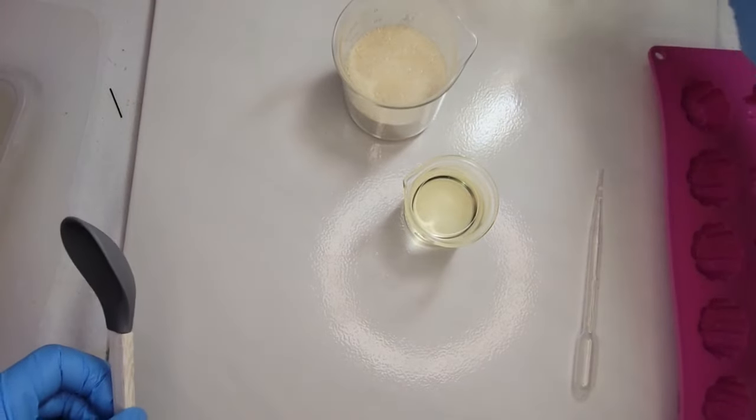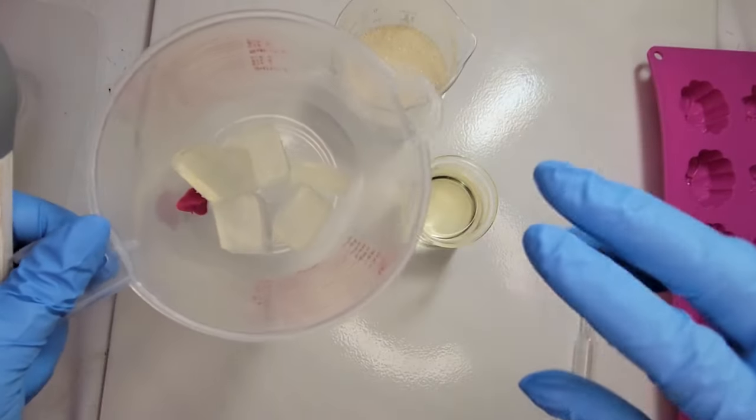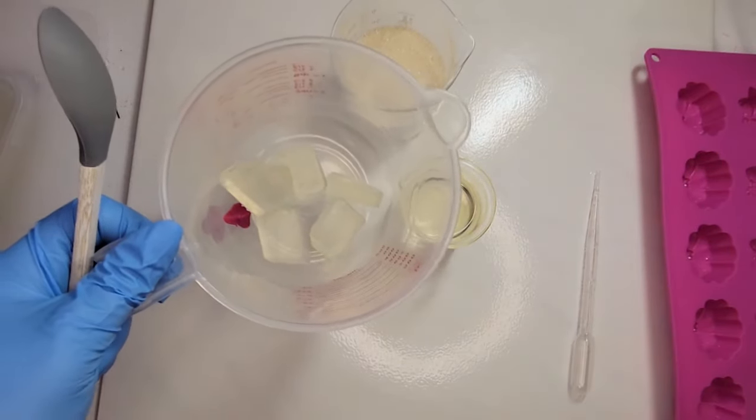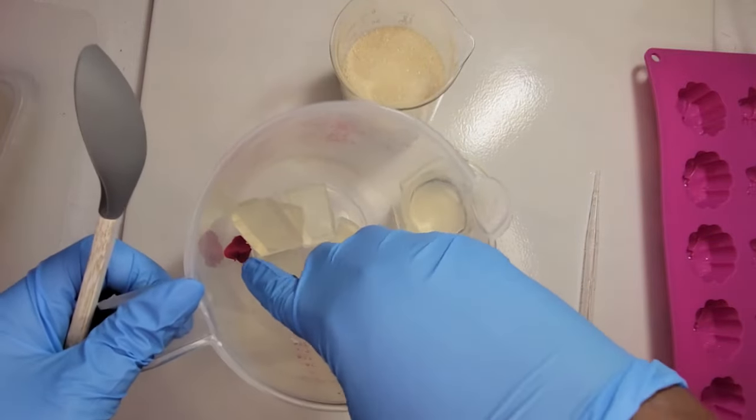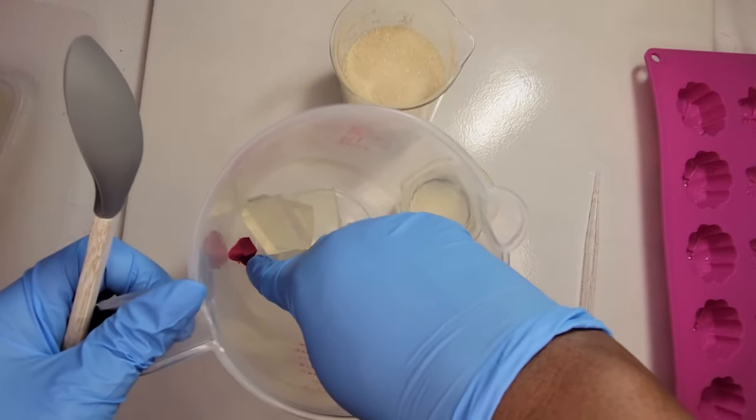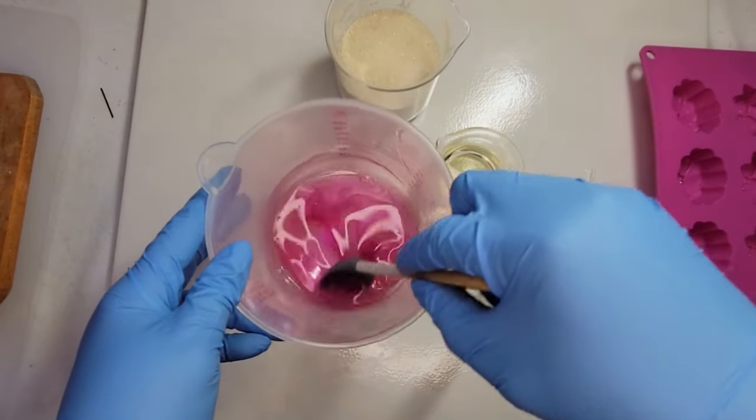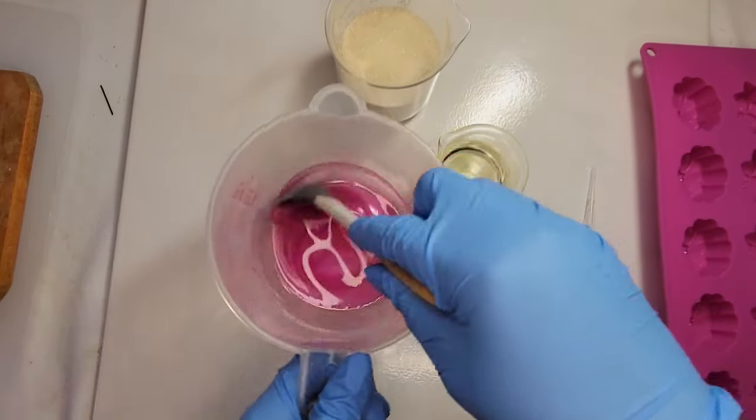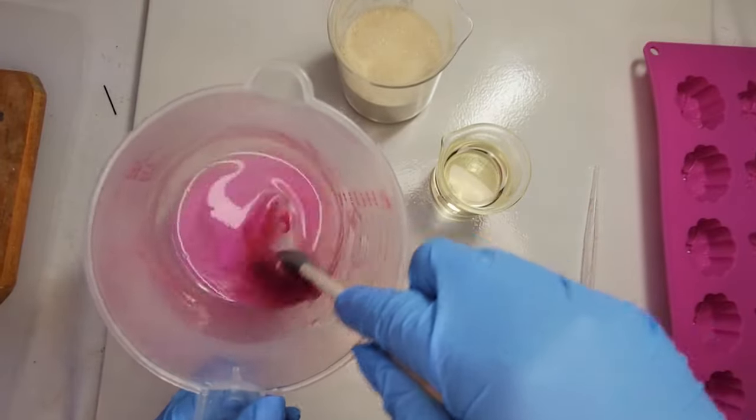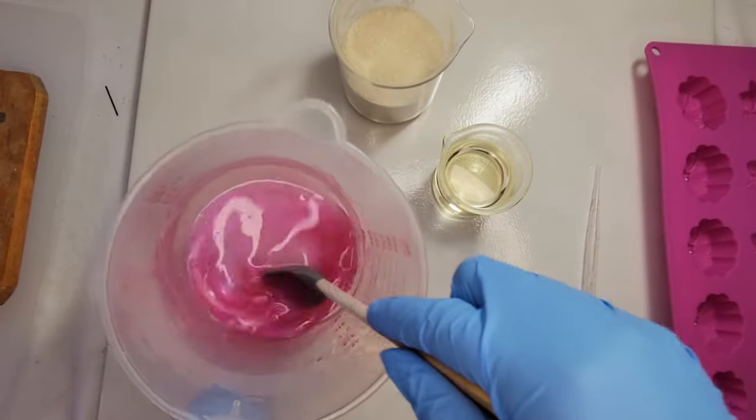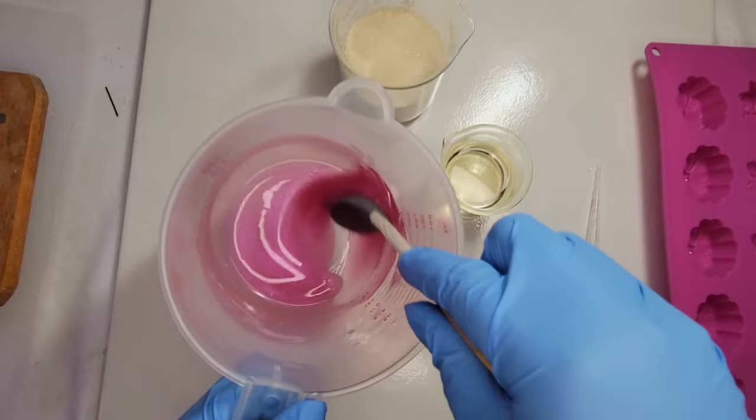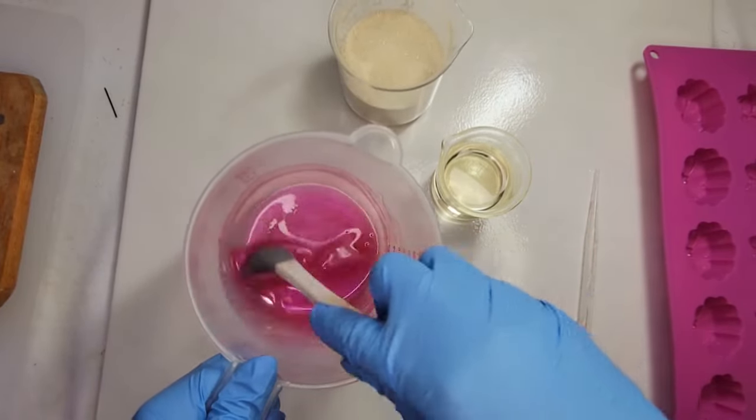In our container we have 2 ounces of the melt and pour soap as well as just a little touch of colorant. It's a color block that I got from Wholesale Supply Plus, and so we put that in the microwave and melted it for 30 to 40 seconds. Now that everything is all melted, we're going to give the coloring a good stir.